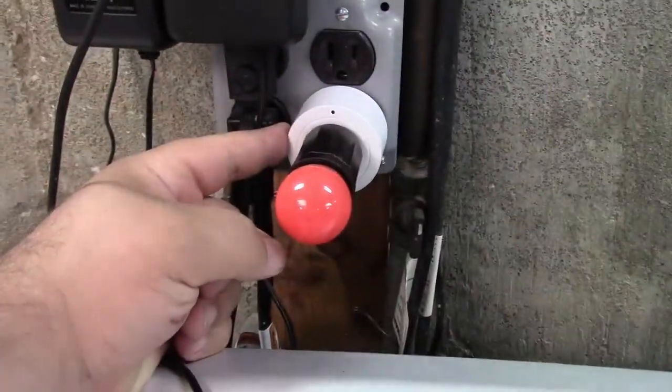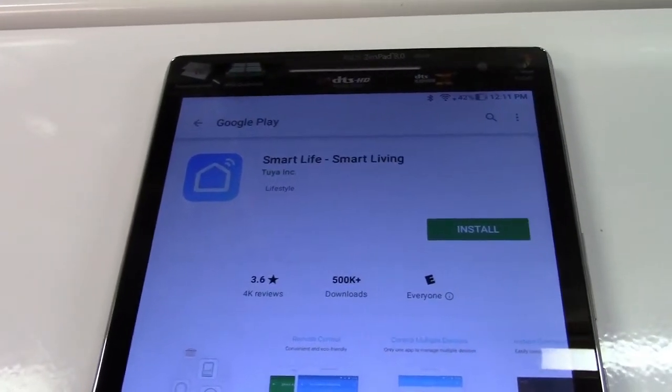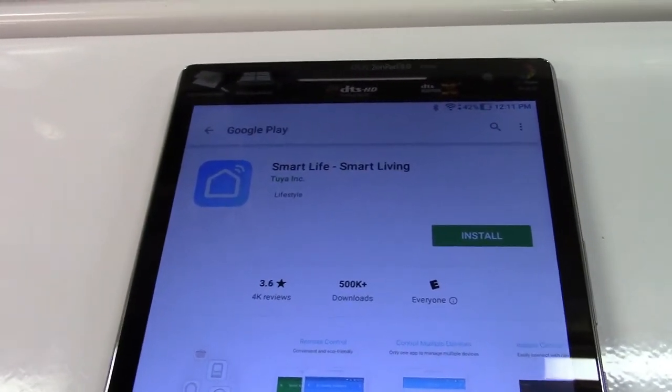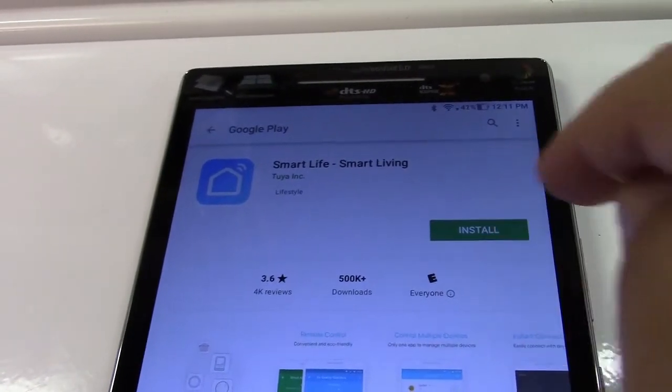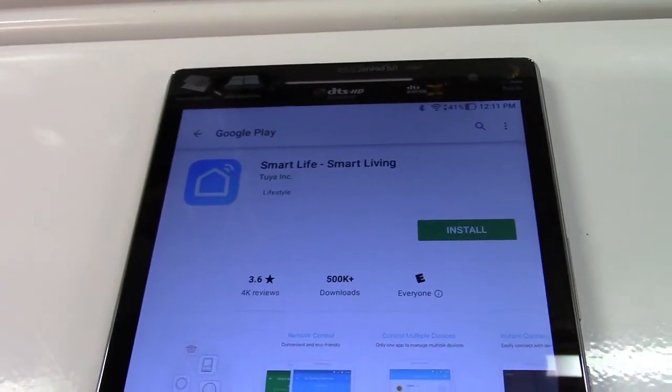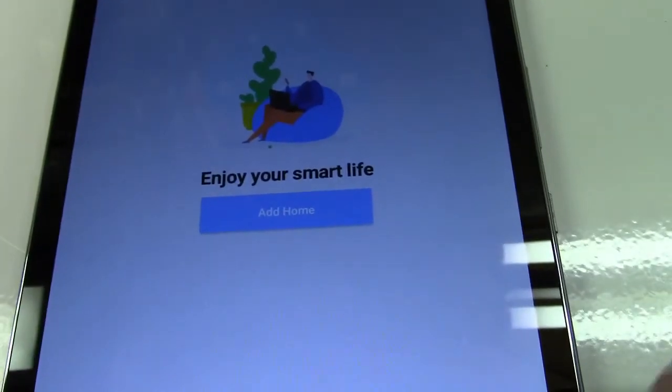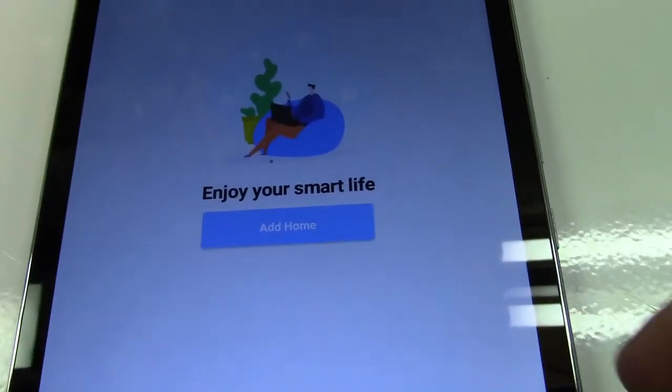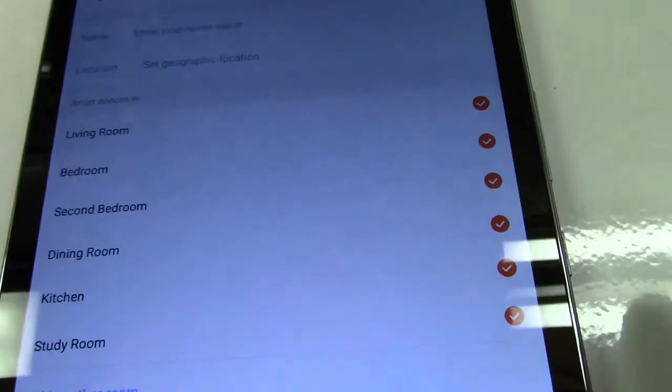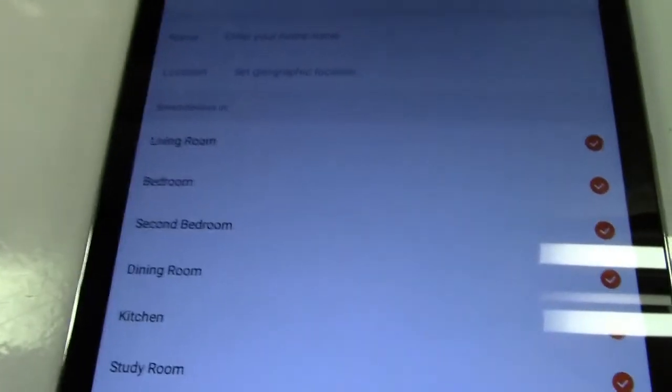All right, to get this to work we're going to need the Smart Life app which you can install on your phone. This happens to be a tablet, same difference. Once you get that set up and installed and register for an account, which of course is free, click on add home and then we have to fill out the information here.